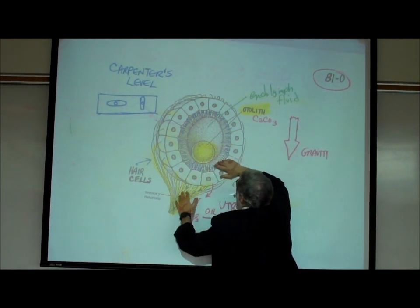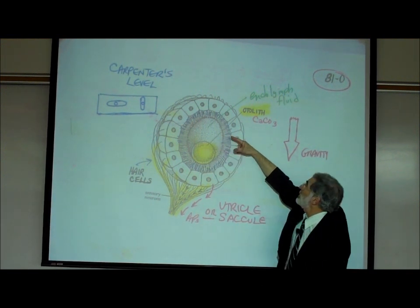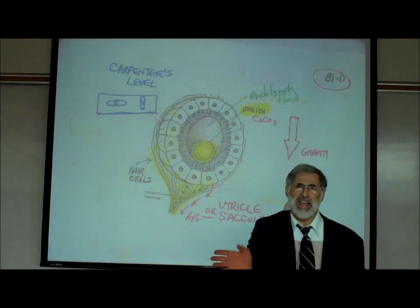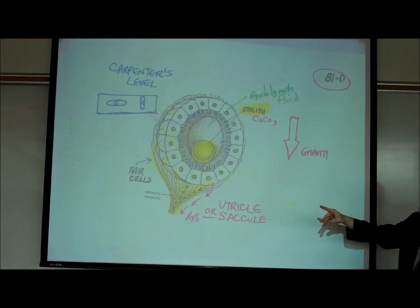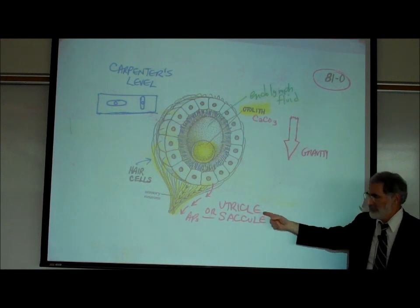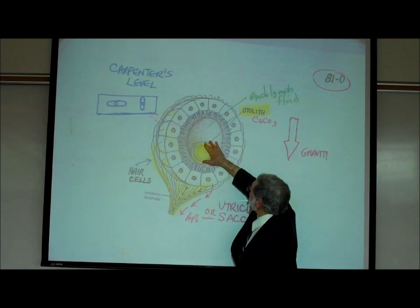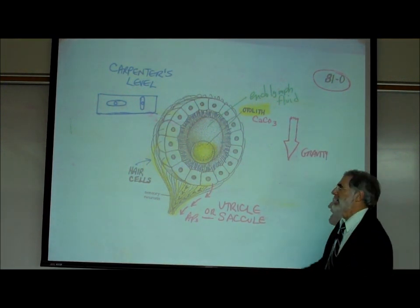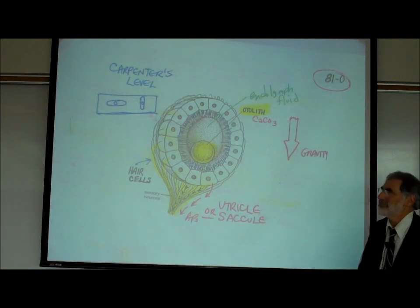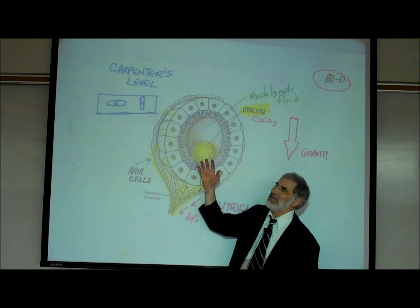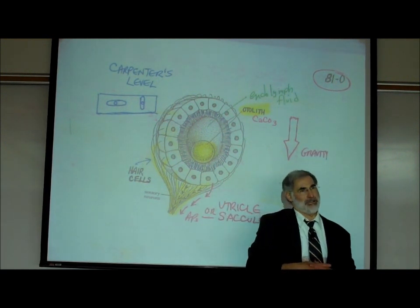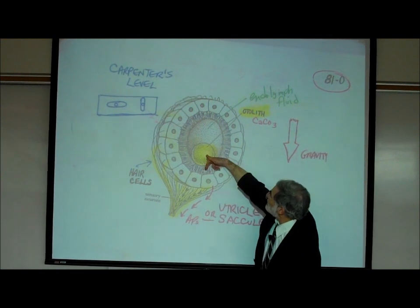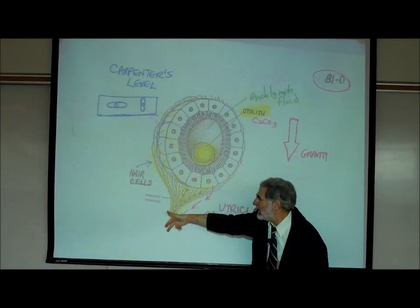Floating in this fluid is a rock called an otolith, made up of calcium carbonate — a calcareous little rock. Fundamentally, this device is a gravitational detector. Since gravity pulls things down, this rock is going to be pulled down and bend the hairs of the hair cells, which send action potentials to the brain. If we turn you upside down, the rock moves the other way, and your brain knows you're upside down because of where gravity is pulling it.